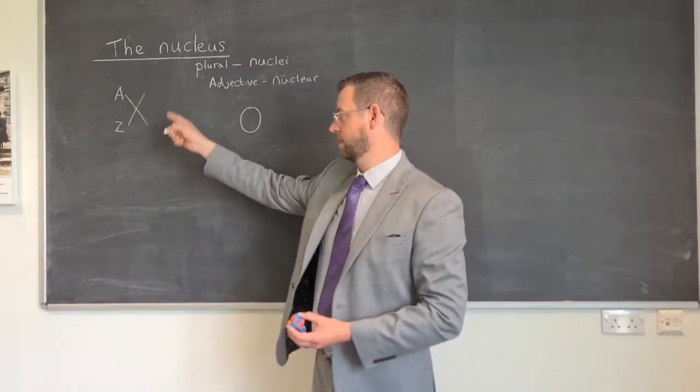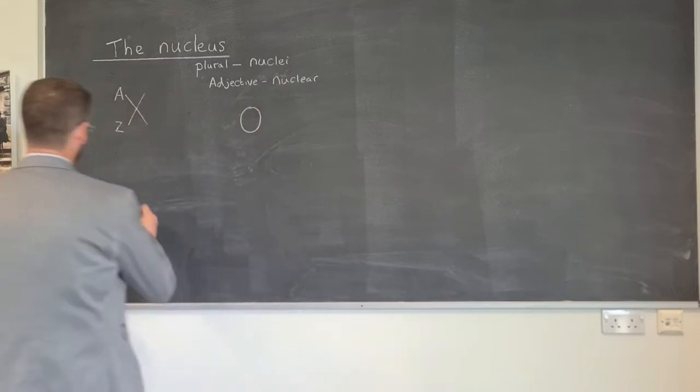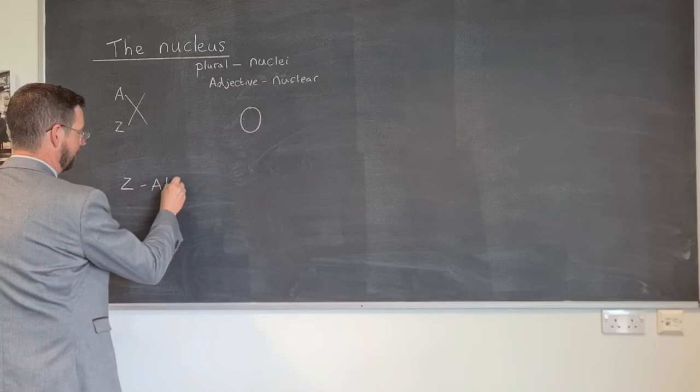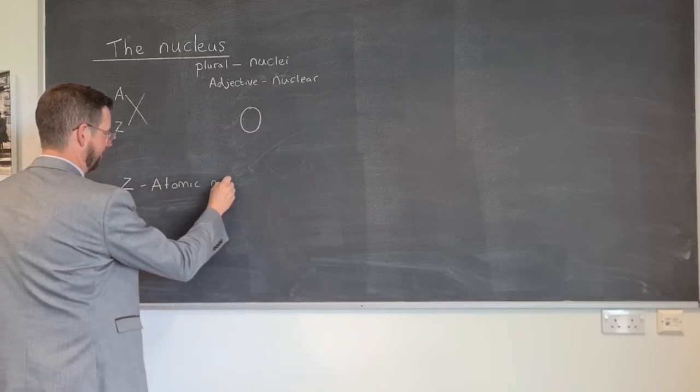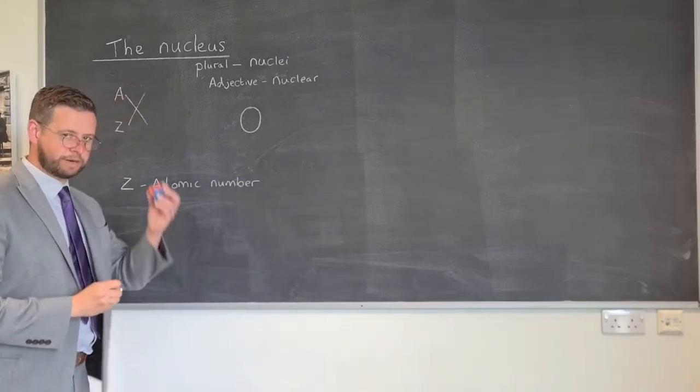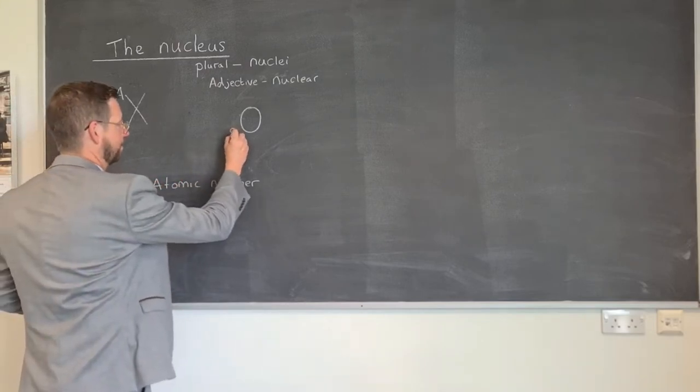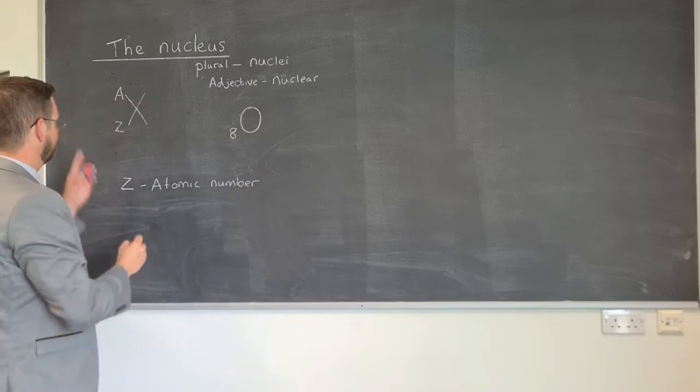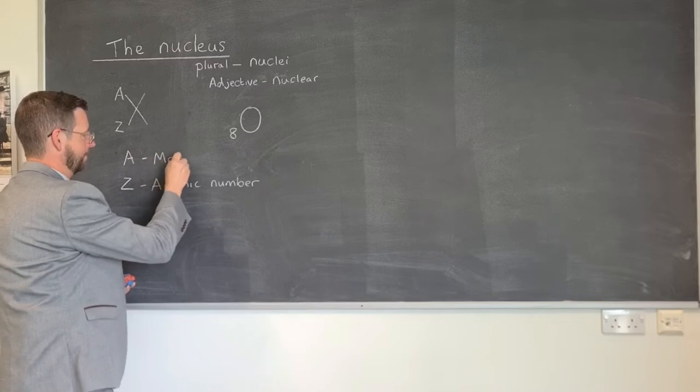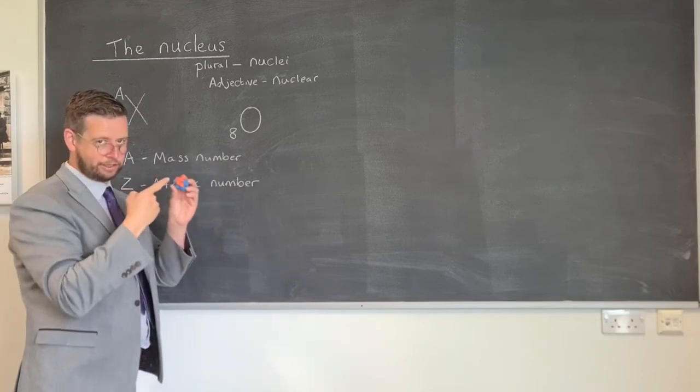Now these two numbers, one represented by A and one represented by Z, they also have meaning. Z is the atomic number. The atomic number is the number of protons present in this nucleus, of which there is eight. So for this one I'm going to put an eight at the bottom. A at the top is called the mass number, and that is equal to the total number of protons and neutrons.